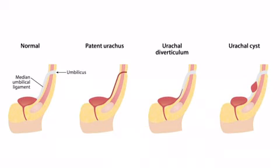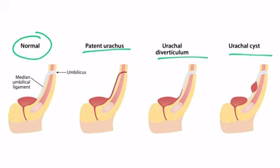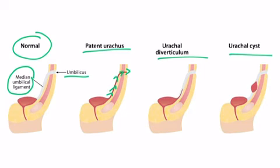This image shows the four different outcomes: the normal and expected outcome, plus three pathologies. On the normal one, the urachus has degenerated and become the median umbilical ligament. Looking at the patent urachus, urine can go straight from the bladder and out the umbilicus. The urachal diverticulum shows this bladder outpouching — it's like the urachus partially obliterated but not quite. A urachal cyst is a partial obliteration with one part that remains open.